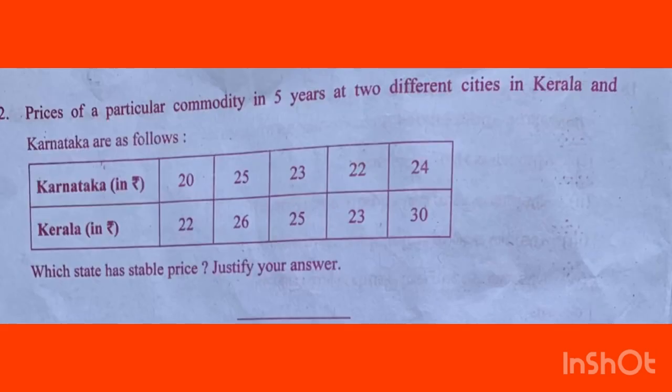In this case, there is a standard deviation or variance question we have to answer. Price of a particular commodity over 5 years — we have been given the price in two different cities, Kerala and Karnataka. The question is: which state has more stable prices? This is answered using coefficient of variation.